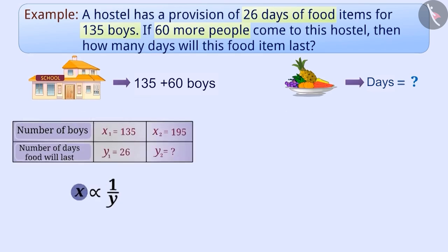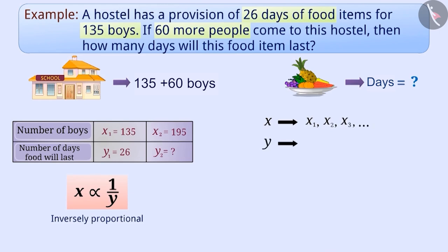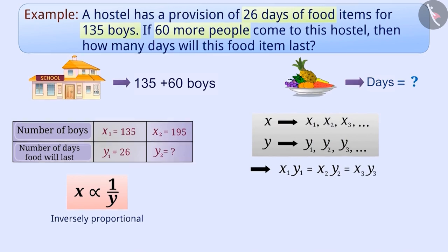If x is proportional to 1 by y, then the values of x are x1, x2, x3, etc., and corresponding y values are y1, y2, y3, etc. respectively, where x1·y1 = x2·y2 = x3·y3, and so on. So here we can say that 135 multiplied by 26 is equal to 195 multiplied by y2.